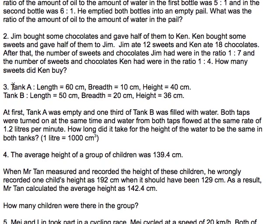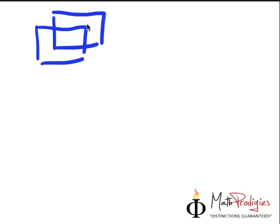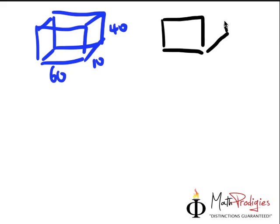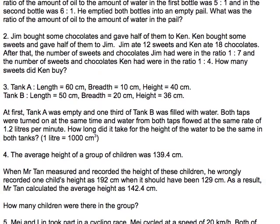So let's do this. I'm going to draw it for you: 60, 10, 40, 50, 20, 36. I'm going to try and draw this as fast as possible. Bam! 60, 10, 40, and the other one is 50, 20, 36, right? Yeah. Let's check if that's right. 60, 10, 40, 50, 20, 36, correct?